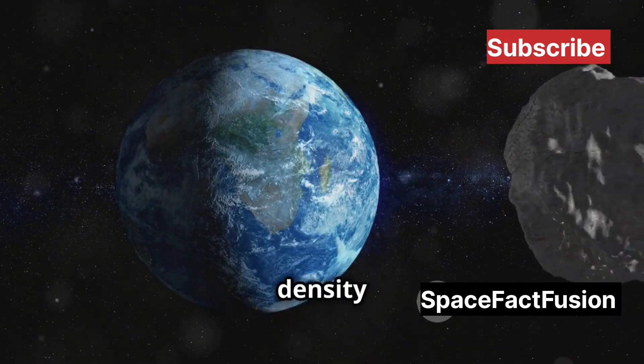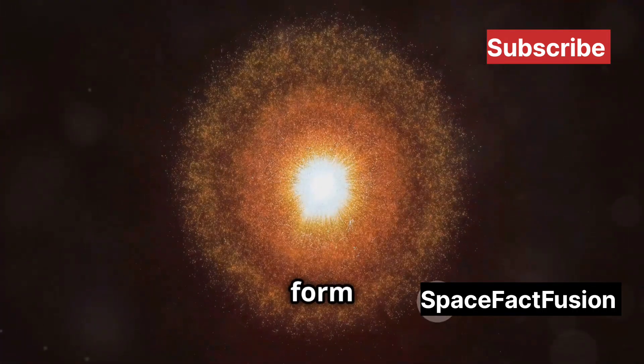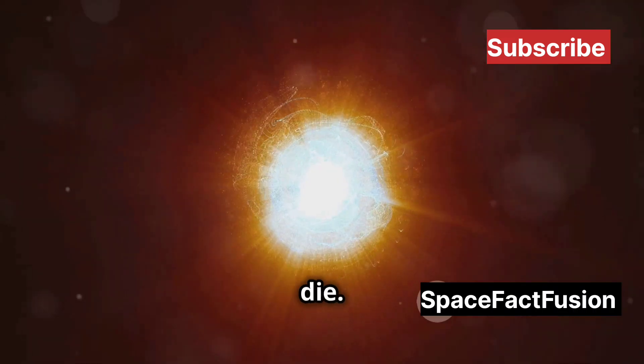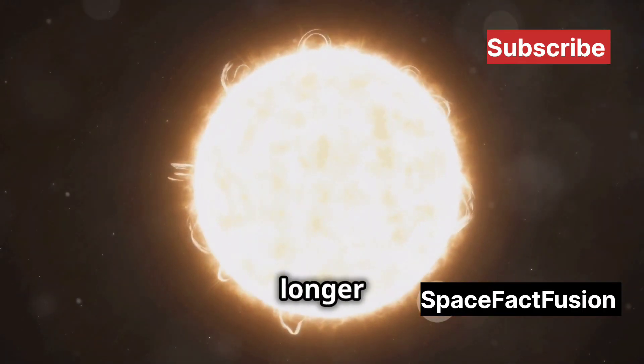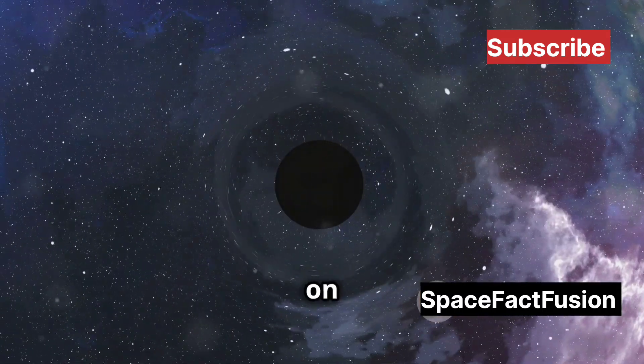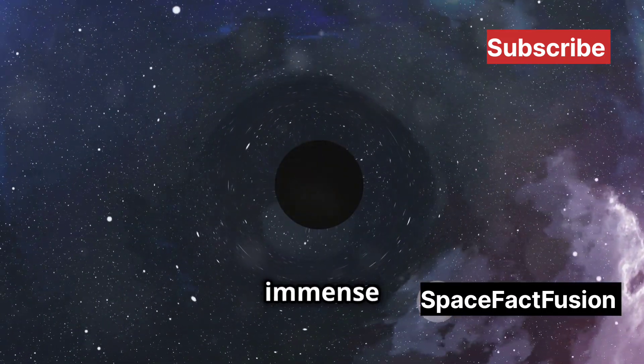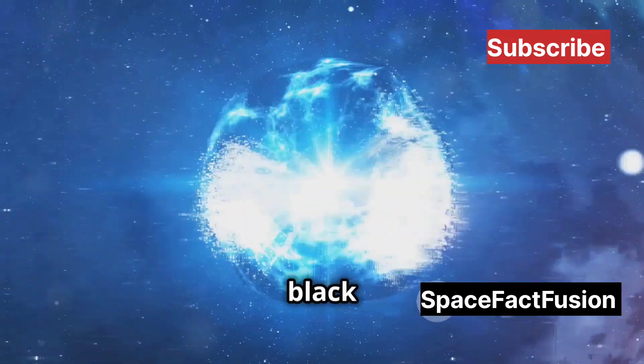That's the kind of density we're talking about. Black holes form when massive stars die. As the star exhausts its nuclear fuel, it can no longer support its own weight. The core collapses in on itself, creating an object of immense density and gravity, a black hole.